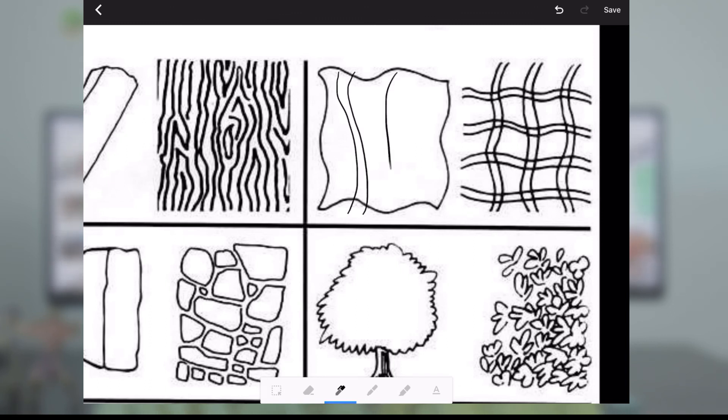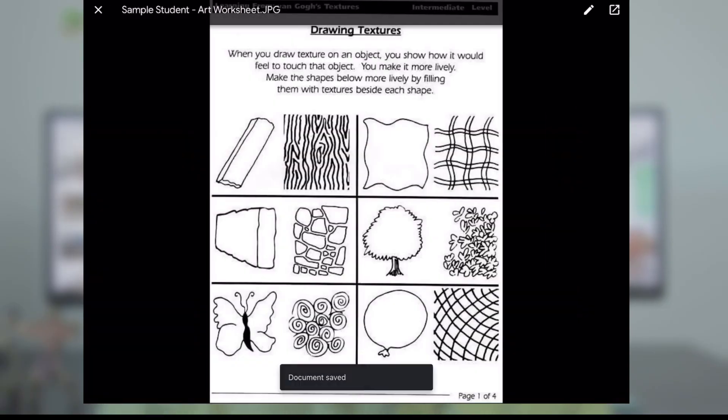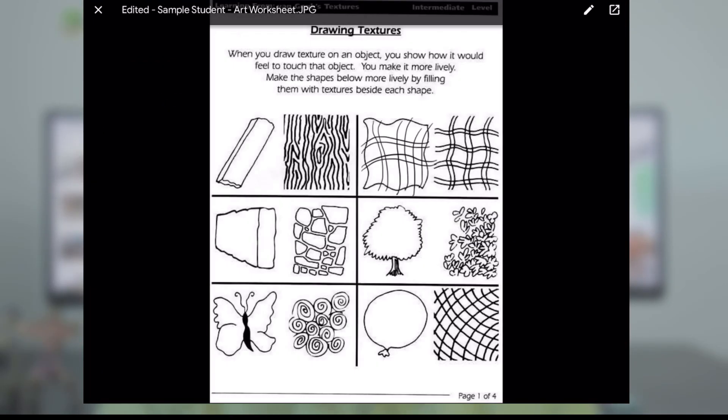So art teachers, this is great for you. History teachers is also great for you because you can have them annotate on maps if you need to. And then this is proof of why I'm not an art teacher, by the way. So I hit save. Once again, it edits the picture. This time, it's going to save it as a picture. So once the editing is done, you'll see edited art worksheet. Voila, it shows my design.